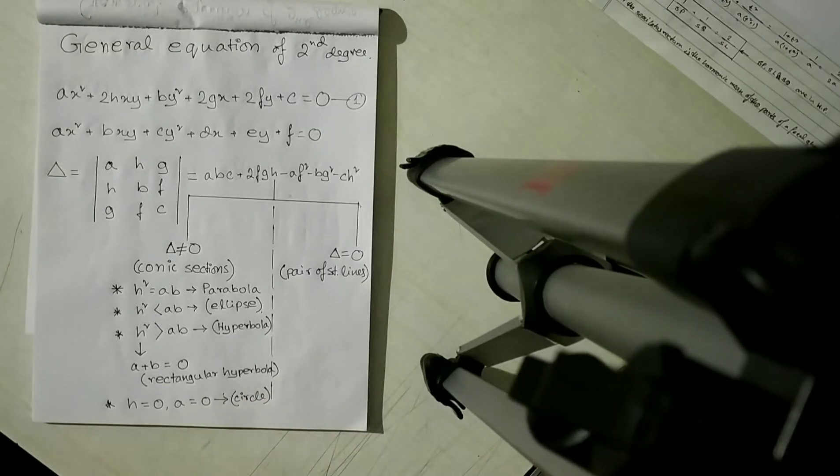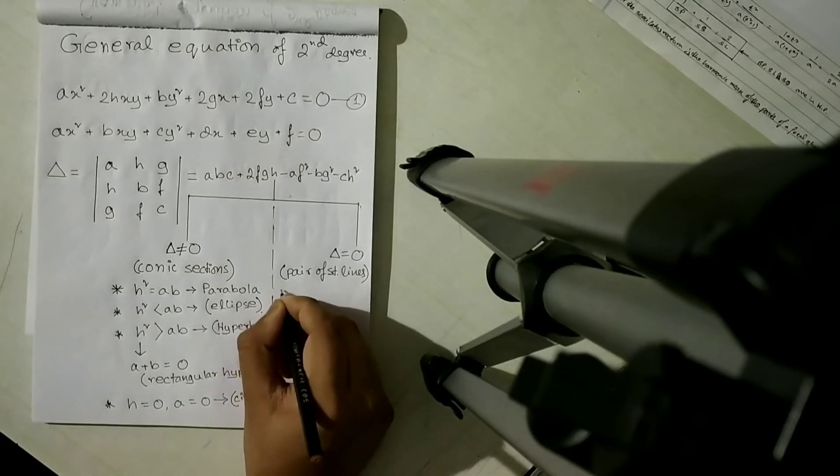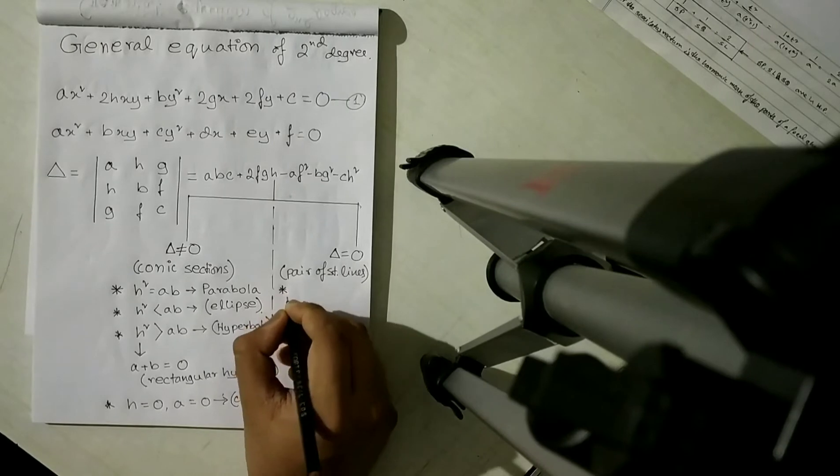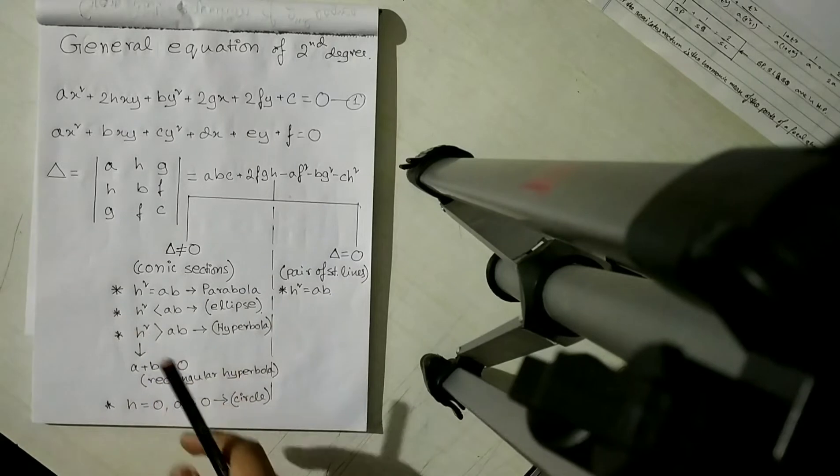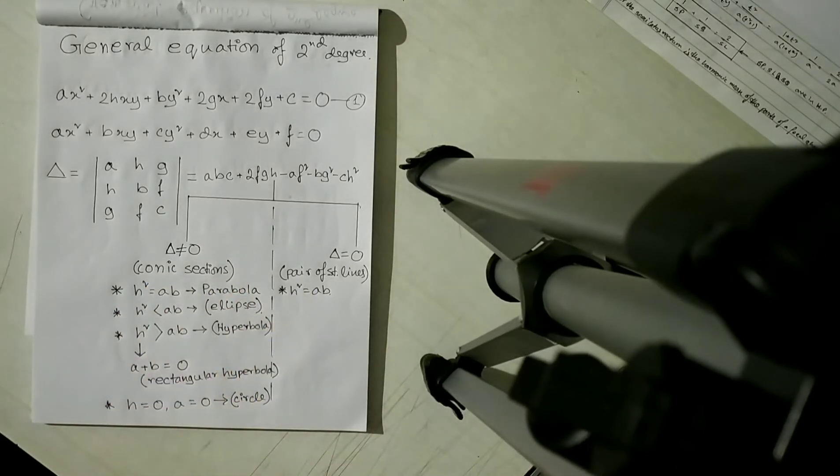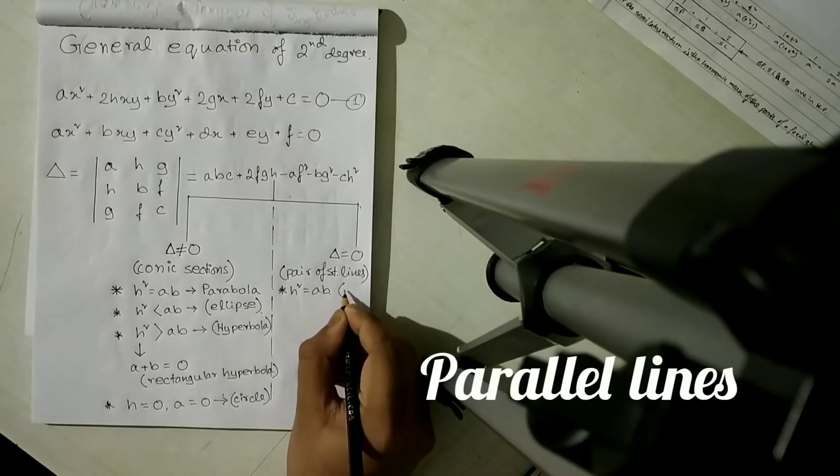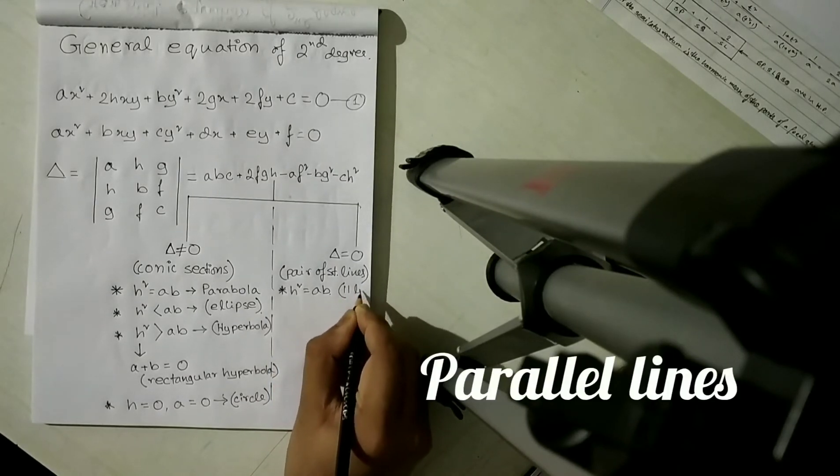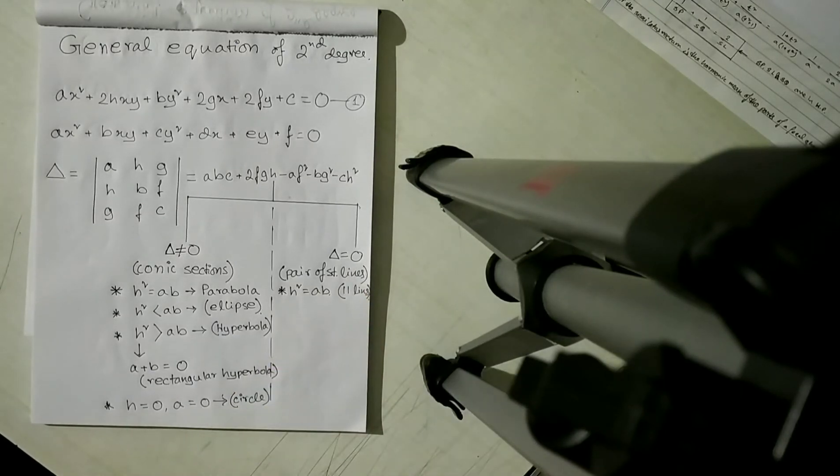Now we come to the cases of the pair of straight lines. If h² is equal to ab, and the conditions are very similar to the ones for conic sections, it is just that Delta is not equal to 0 for conics and Delta is equal to 0 for straight lines. So when h² is equal to ab, it symbolizes parallel lines. I'm using the symbol for parallel because I don't have that much space.